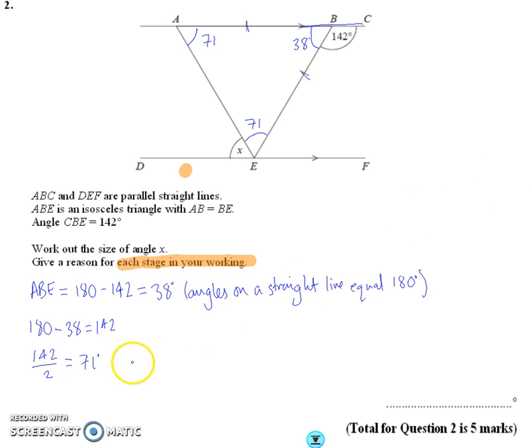And I'm going to say that BAE, that's that top angle up here, is equal to AEB, this bottom angle here, which is 71 degrees. And the reason for that is the base angles in an isosceles triangle are equal.